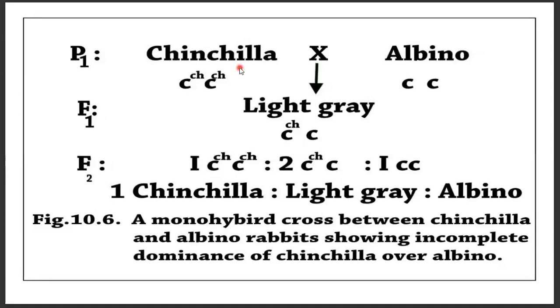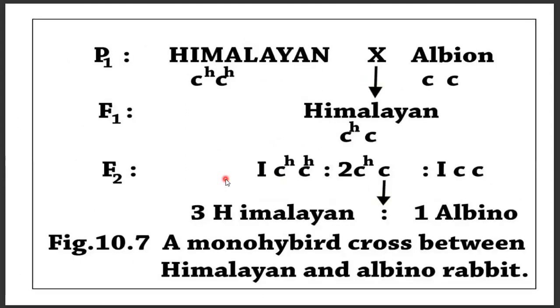Then chinchilla and albino rabbits were crossed. The F1 generation is light grey, again showing the incomplete dominance of the chinchilla allele over the albino allele. The F2 generation gives a ratio of 1:2:1.